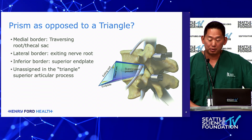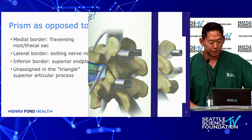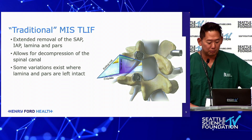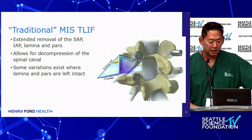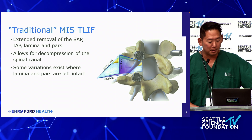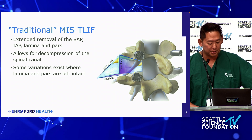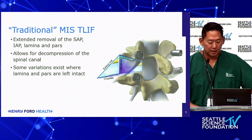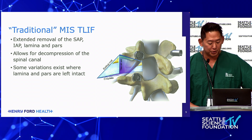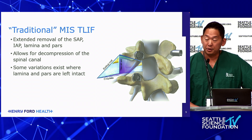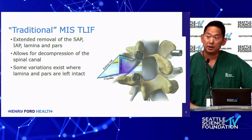What you do with the superior articular process dictates how you get to the disc space in different approaches, whether endoscopic or traditional MIS T-LIF. With the traditional MIS T-LIF, you have an extended removal of the SAP, IAP, and maybe the laminar pars, allowing for decompression of the spinal canal. There are variations where you leave the pars and lamina intact, or remove part of the SAP for an endoscopic approach. On the schematic, you can see quite a few neural elements exposed: the exiting nerve root, traversing nerve root, and thecal sac — all things spine surgeons have to safeguard.